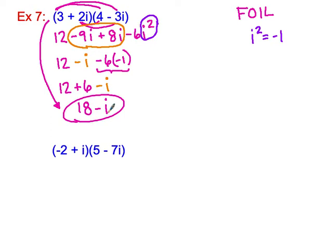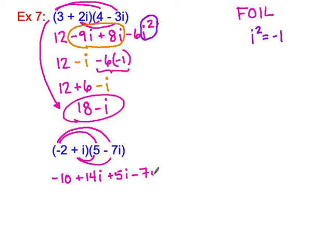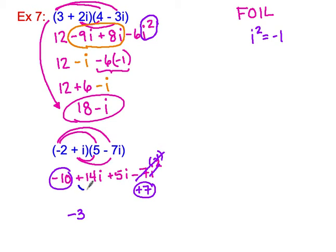Let's try one more multiplication. Using FOIL: firsts give me negative 10, outsides give me positive 14i, insides give me positive 5i, and lasts give me negative 7i squared. Replacing i squared with negative 1 changes the negative 7 to a positive 7. Collecting real parts: negative 10 plus 7 is negative 3. Collecting imaginary parts: 14i plus 5i is 19i. The result is negative 3 plus 19i.